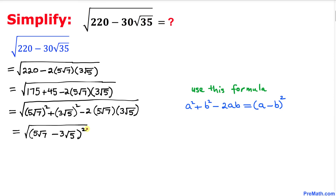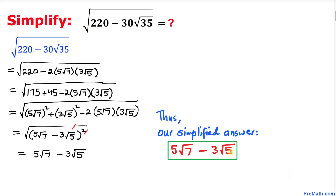So this simplifies to simply 5 times square root of 7 minus 3 times square root of 5. Thus our simplified answer turns out to be 5 times square root of 7 minus 3 times square root of 5. Thanks for watching, and please don't forget to subscribe to my channel for more exciting videos. Bye!